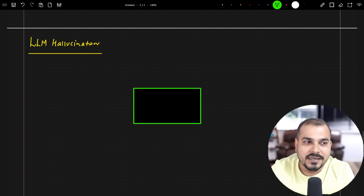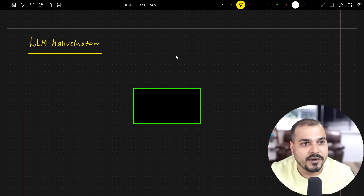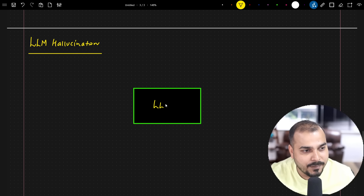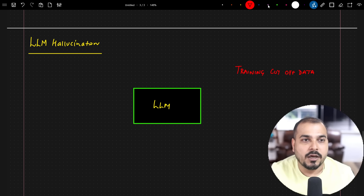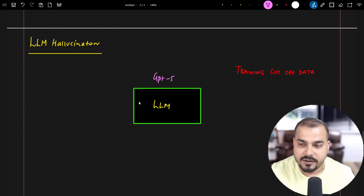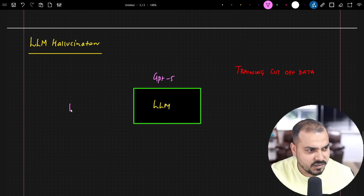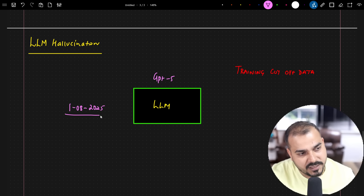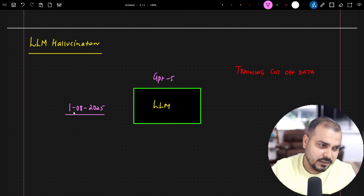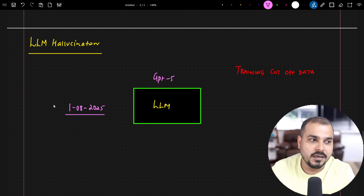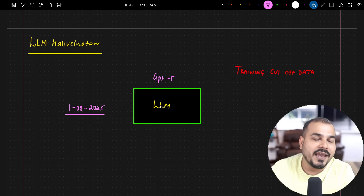So, LLM hallucination. As you all know, every LLM model has a training cutoff date. That basically means — let's say right now in OpenAI we have something called a GPT-5 model, and let's consider that the training cutoff date is 1st August 2025. That basically means whatever data we had before 1st of August, with all that data we have trained this specific model, and the recent new data the LLM will not have any clue or idea about.